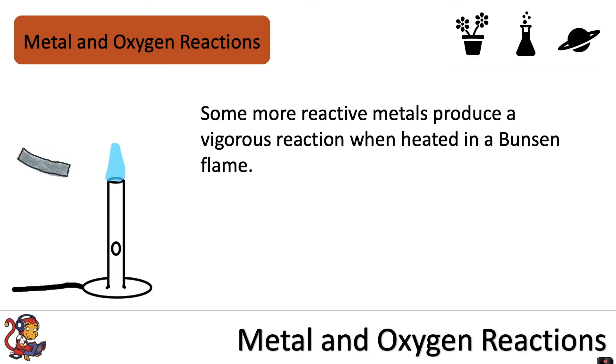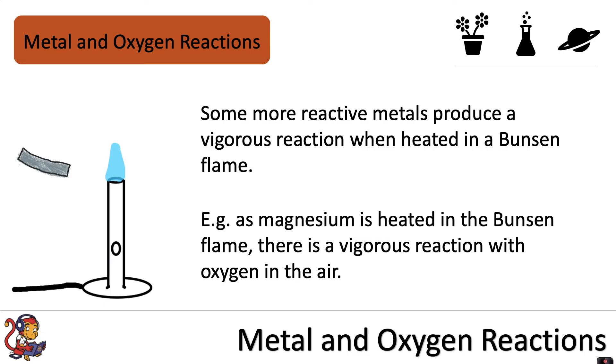Some more reactive metals produce a vigorous reaction when heated in a Bunsen flame. For example, as magnesium is heated in the Bunsen flame there is a vigorous reaction with oxygen in the air and you will see a very bright light given off in that reaction, so you'd have to protect your eyes to stop them from being damaged.